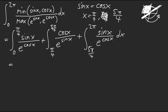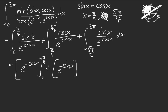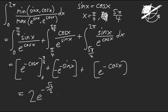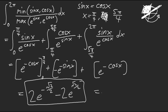This is just u-substitution. We get −e^(cos x) from 0 to π/4, then e^(sin x) from π/4 to 5π/4 (with a negative sign as well), then −e^(cos x) again. After the tedious computation the answer is 2 − e^(−√2/2) − 2e^(√2/2), or equivalently −4 sinh(1/√2) in hyperbolic sine form.